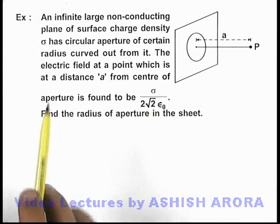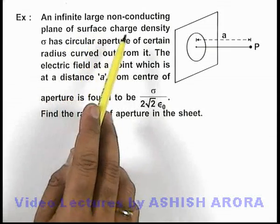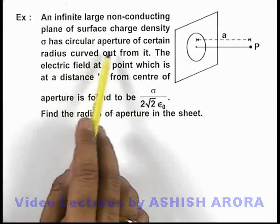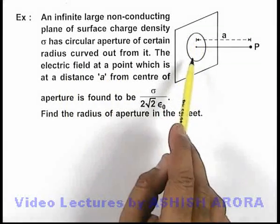In this example we are given that an infinite large non-conducting plane of surface charge density sigma has a circular aperture of certain radius which is carved out from it.